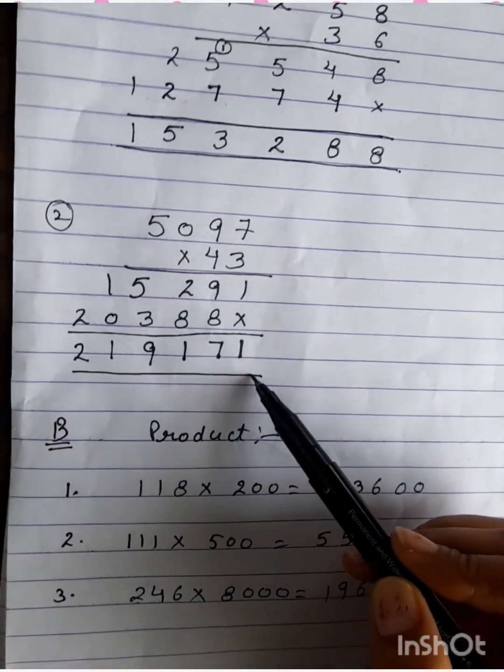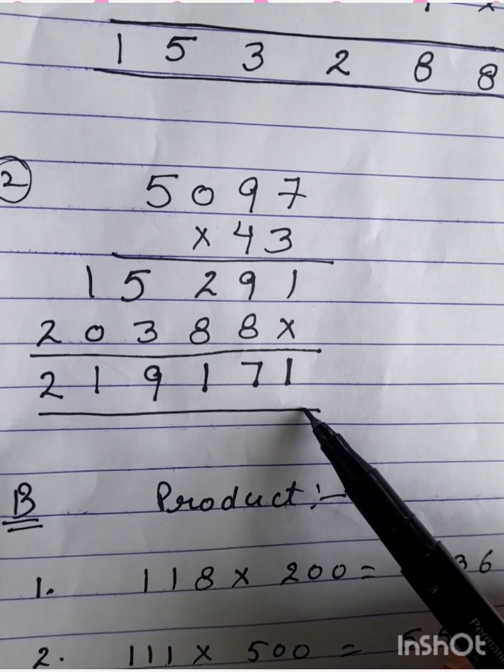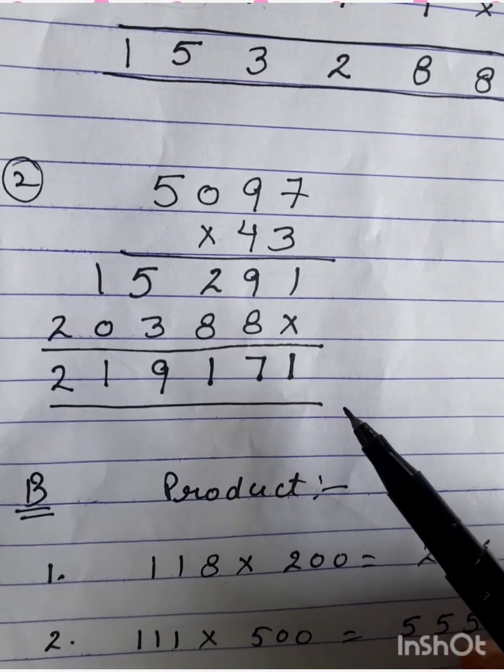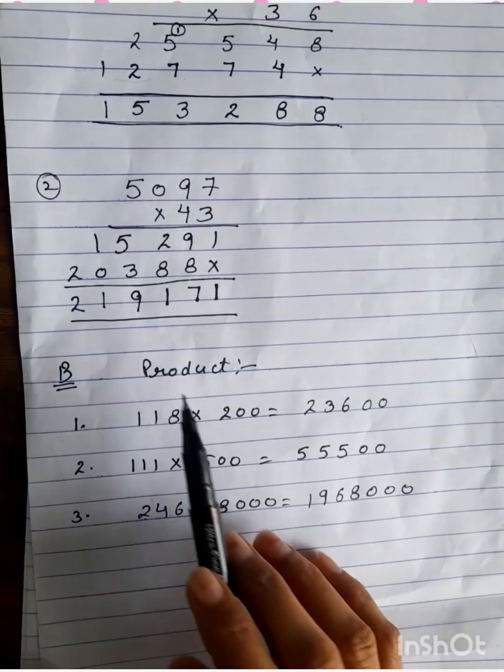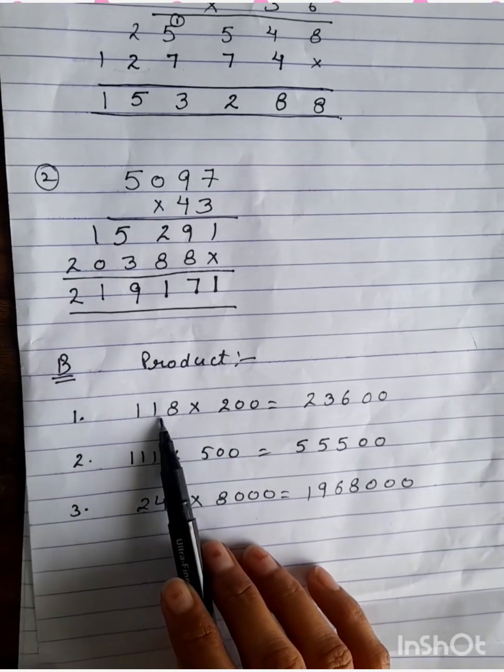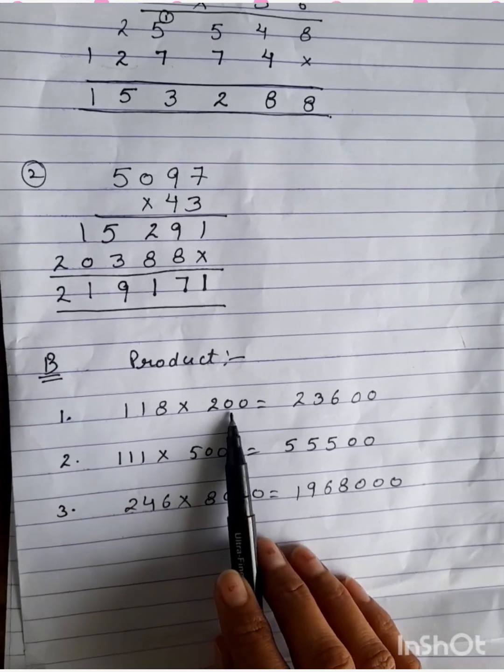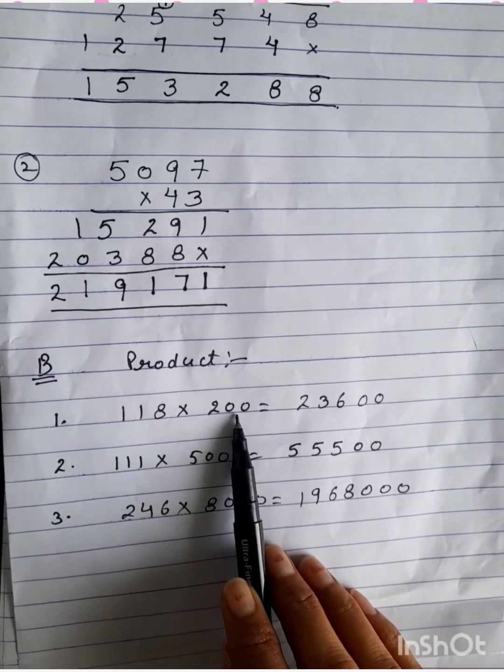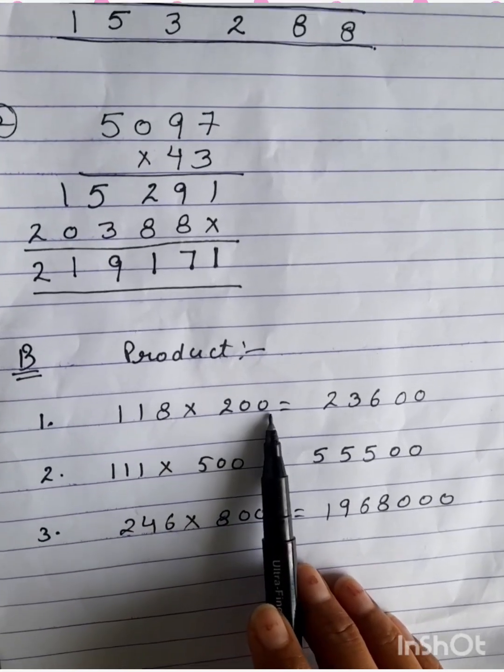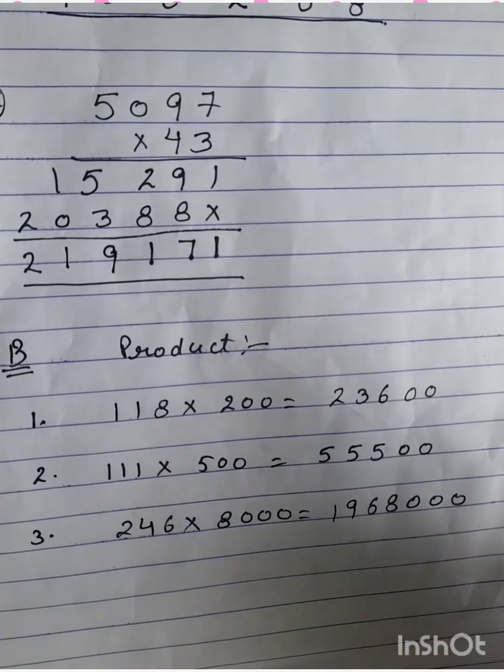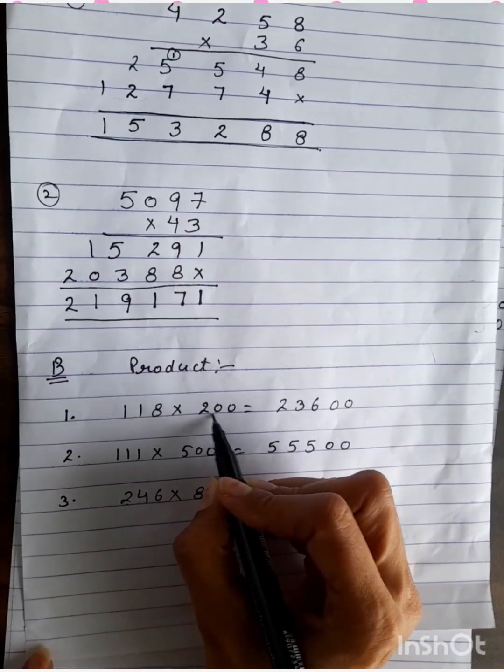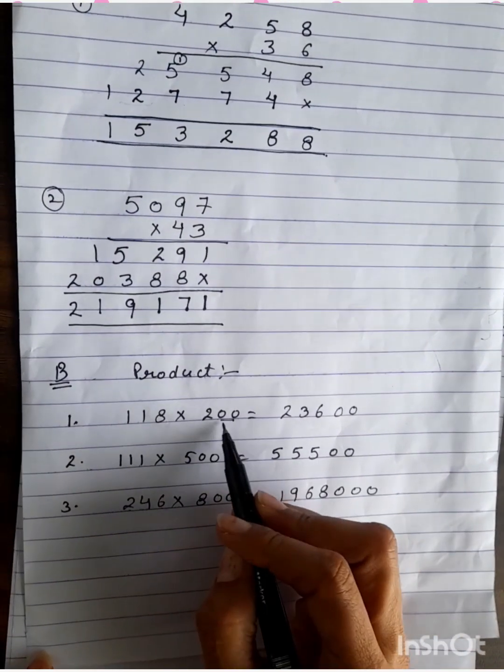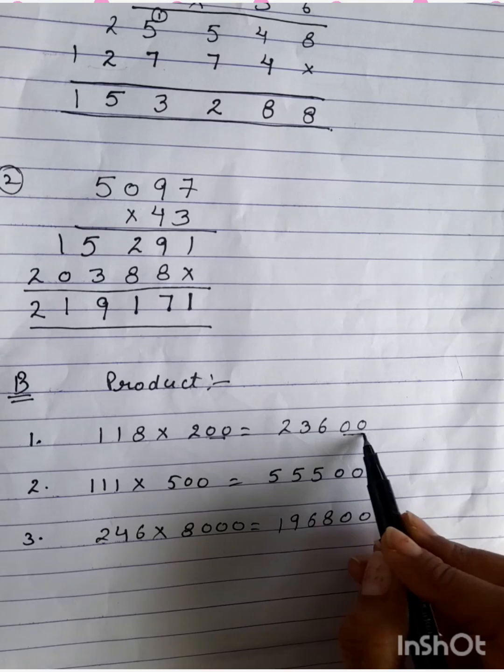Similarly, the next question is there. So I think you can try it by yourself and you can take the help of your parents and guardians also. Then there is a product in which multiplier and multiplicand is there, and multiplicand have 2 zeros. These questions are very simple.